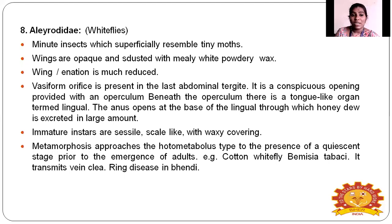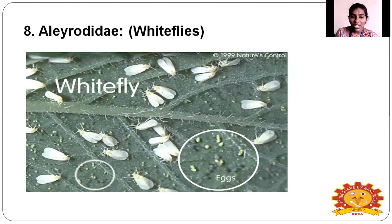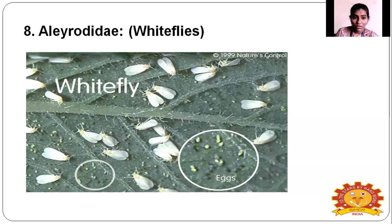Aleyrodidae — the whitefly, a most common insect. They have a yellow body with powdery forewings and hind wings. They also produce very minute yellowish eggs. Whiteflies are the most common pest on the majority of vegetable plants.